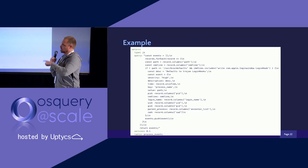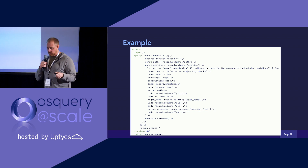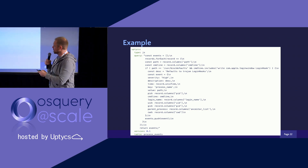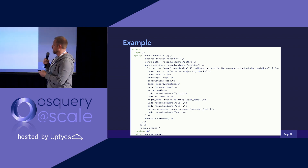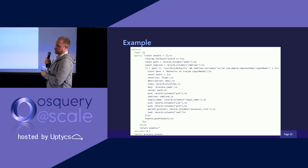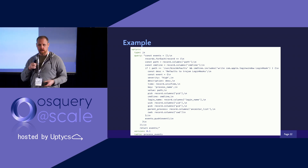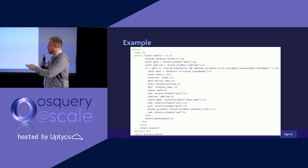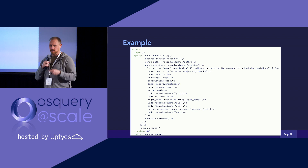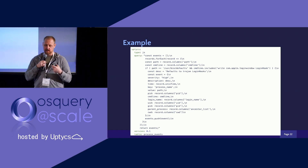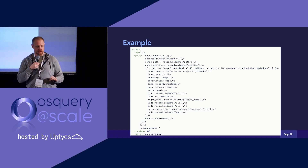Here's the example JavaScript rule for the defaults hook — it's looking for any process where the path is /usr/bin/defaults and the command line contains 'write com.apple.loginwindow LoginHook'. The rest is pretty much boilerplate. It operates on the process_events table and if this fires, it's generally known bad — something we need to address right now.